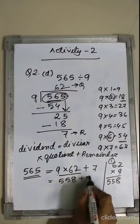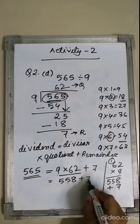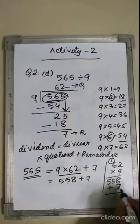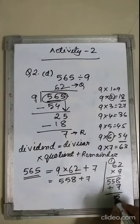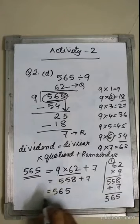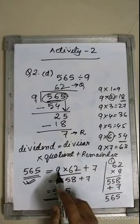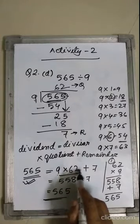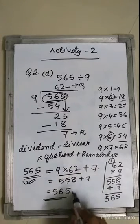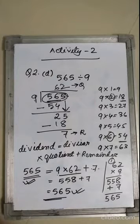8 plus 7 is 15, carry 1, giving us 565. These two answers are the same. Therefore, the division algorithm is proved.